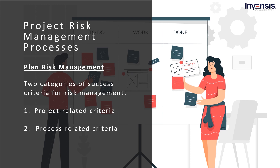The first one is called project-related criteria. To assess the success of project risk management, the stakeholders must agree on an acceptable level of results of the project-related criteria such as cost, time, and scope. To achieve this kind of consistency among stakeholders, the risk management plan must present objectives regarding the project definition documents. To guide risk management, particularly in prioritizing risk responses, stakeholders should also prioritize each project objective.